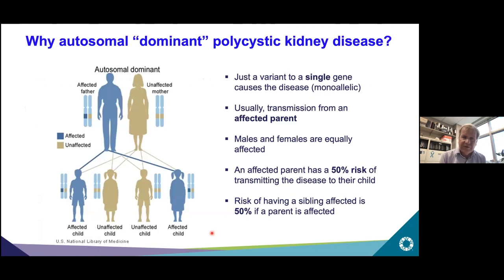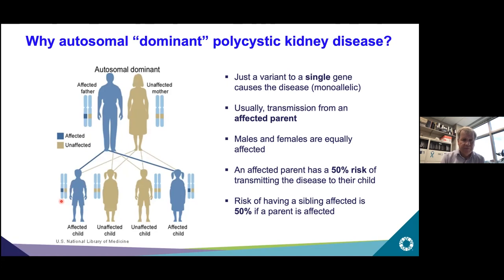We call it dominant because a single change — shown here coming from the father who has ADPKD — is inherited by children, and just that one copy of the gene is sufficient to cause polycystic kidney disease. In recessive disease, we would need a variant from both parents, and on average only one in four children would develop ARPKD. But in dominant disease, on average half of the children will inherit the variant and develop ADPKD.